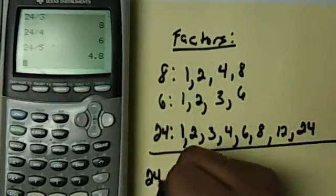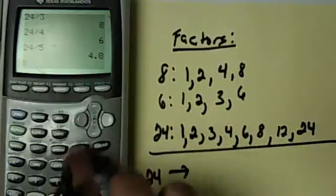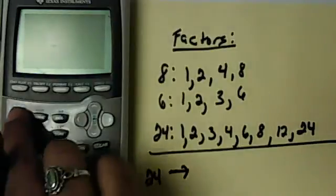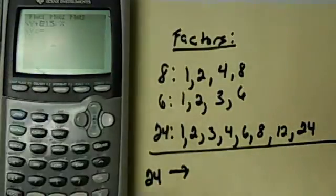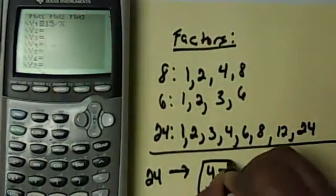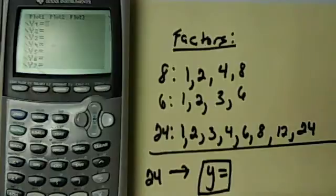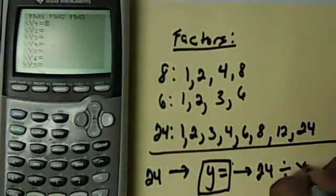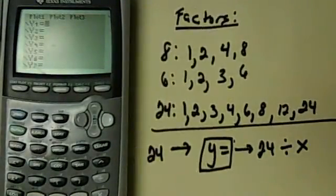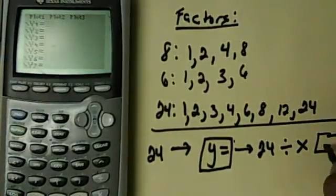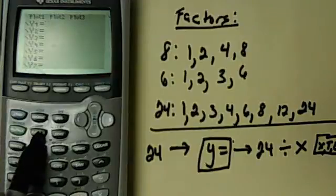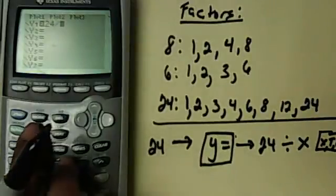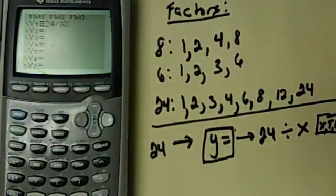So let's say if I wanted to list the factors of 24 in my calculator. I'm going to hit the Y equals key, which is right here in the upper left hand corner. And then in here, I'm going to put my number, in this case 24, and I'm going to divide it by X. To get X, I need to hit the XT theta button, which is right here under mode. So I'm going to put 24 divided by X, and I hit enter.